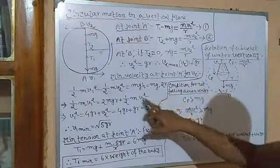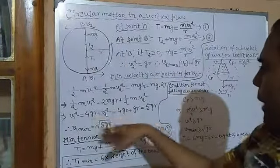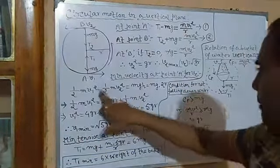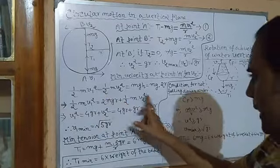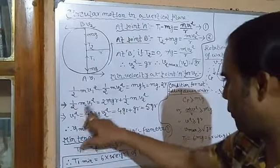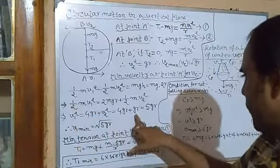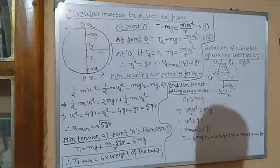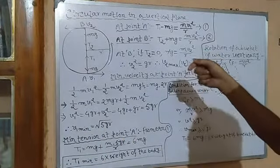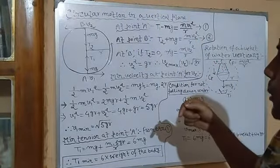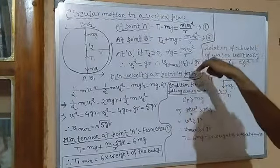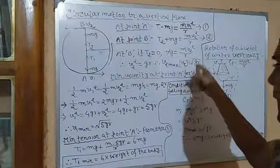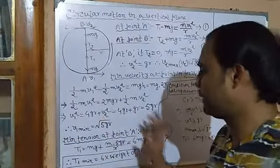The height H traversed from A to B is 2R (the diameter). So: ½mv1² − ½mv2² = mg(2R). Cancelling m and substituting the critical velocity V2² = gR, we get: V1² = 4gR + V2² = 4gR + gR = 5gR. Therefore, V1_minimum = √(5gR). The critical velocity at the top is √(gR) and the minimum velocity at the bottom is √(5gR).